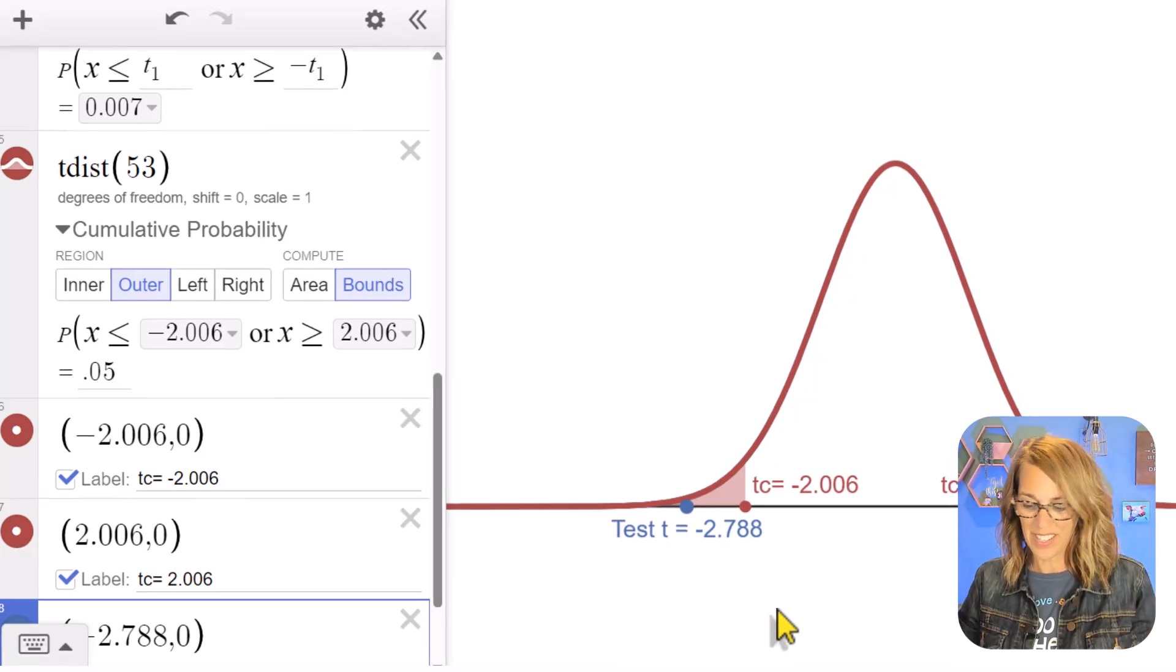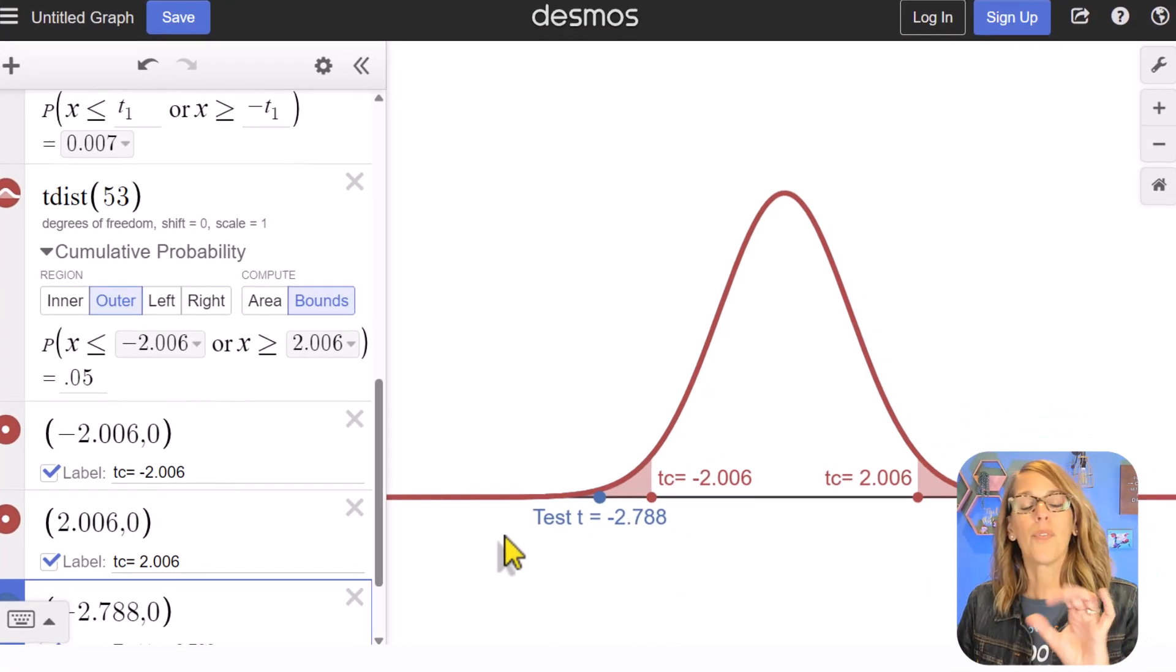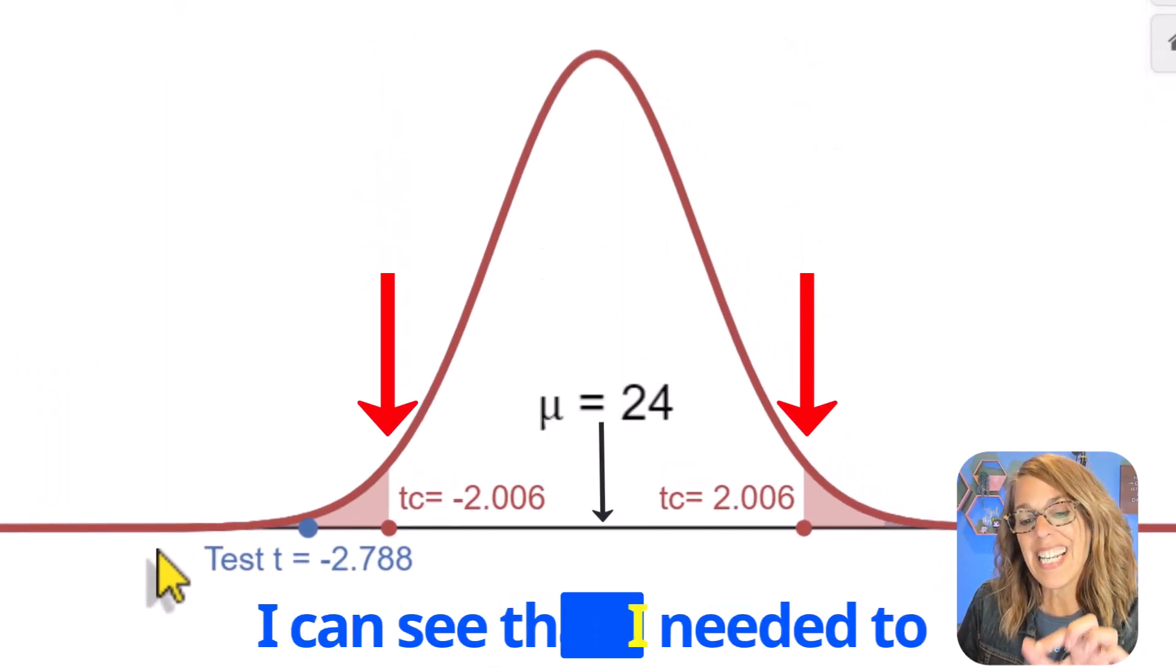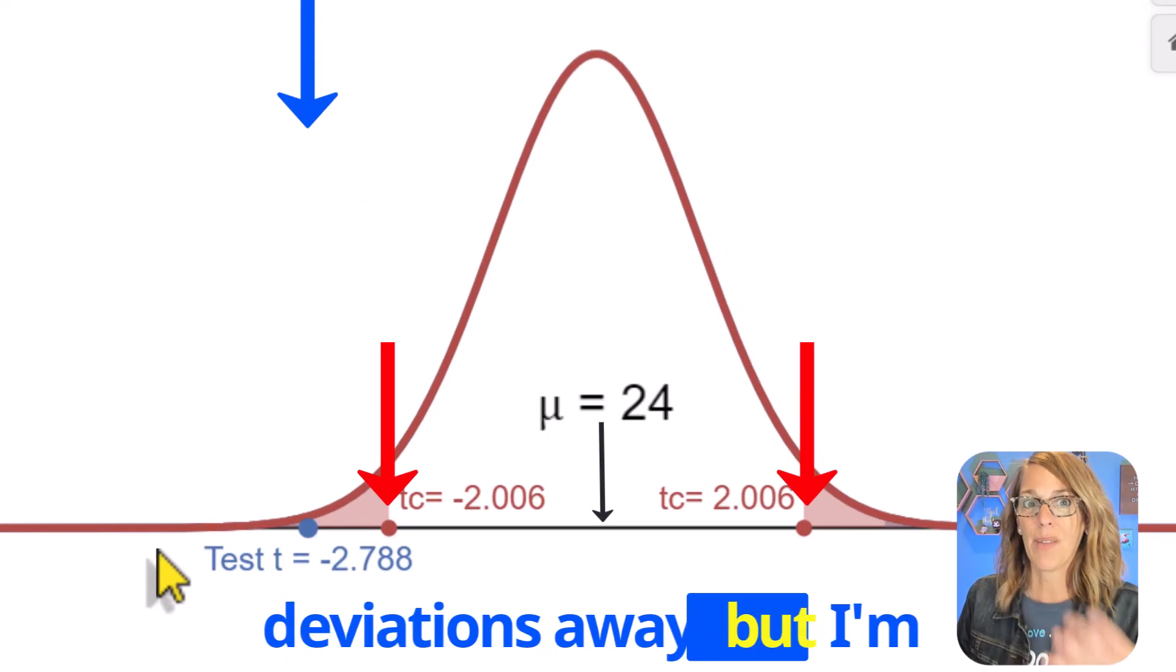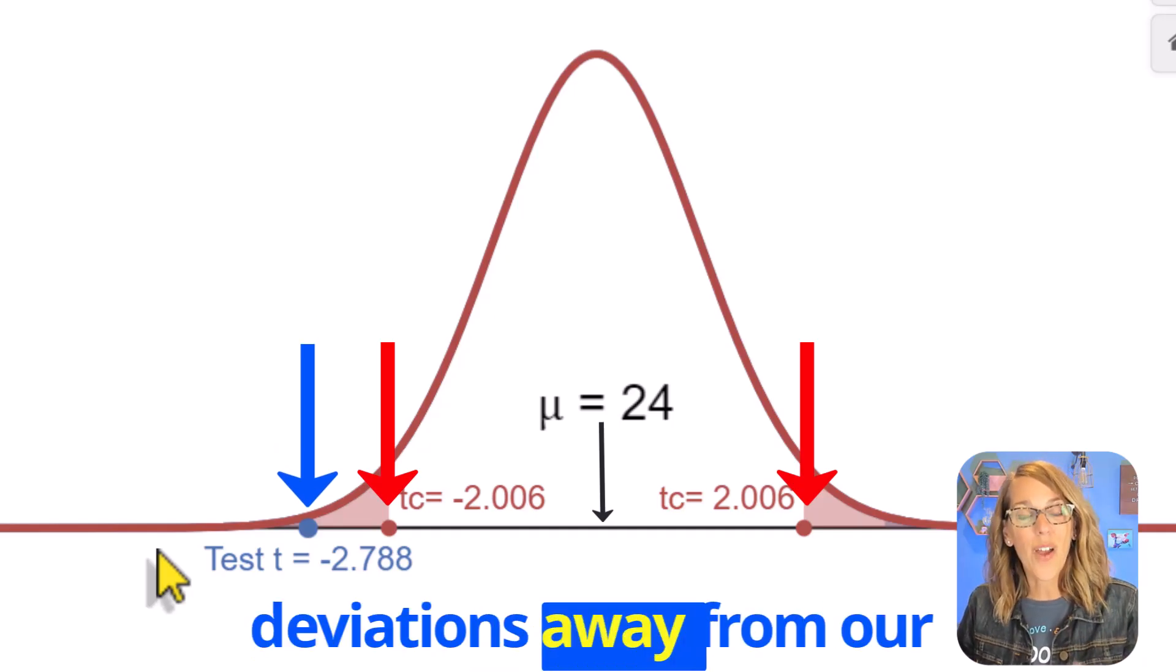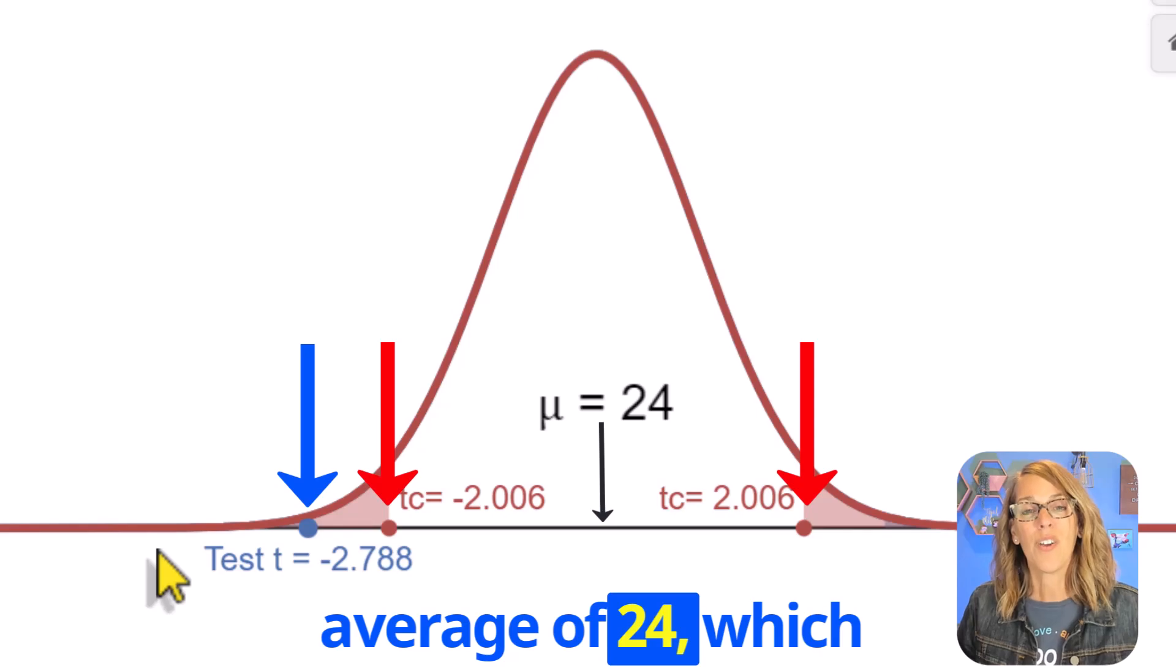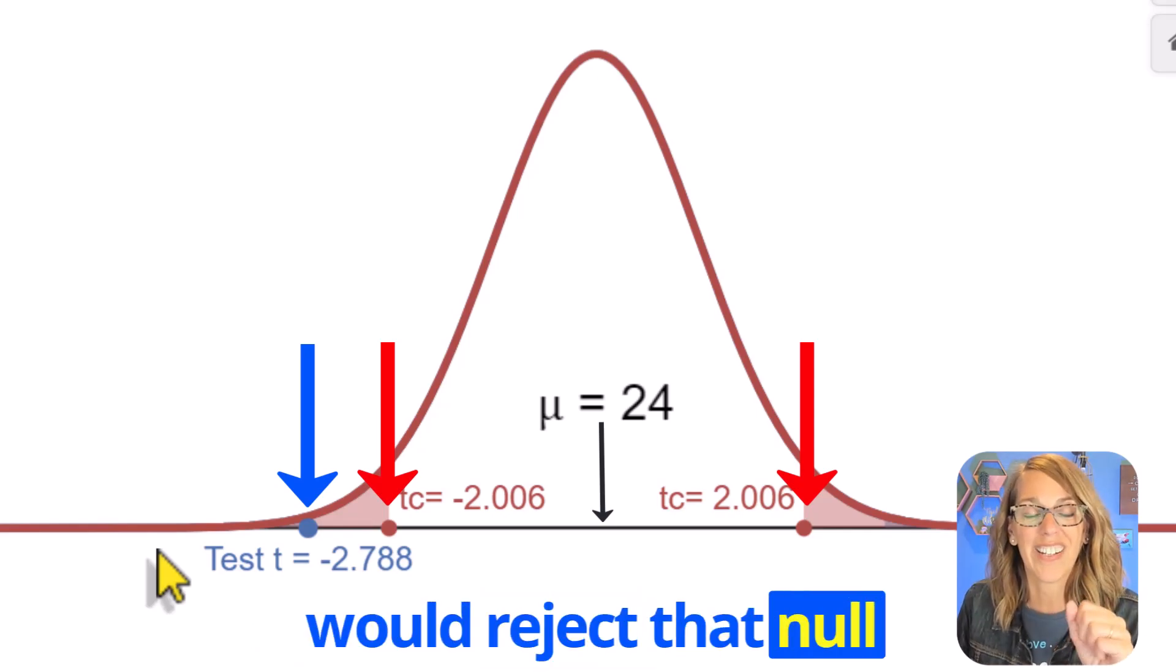Well from my graph now I can see that I needed to be 2.006 standard deviations away, but I'm actually better than that. I'm 2.788 standard deviations away from our average of 24, which means that we are significantly different. We would reject that null hypothesis. I'd love to know how you use hypothesis testing in Desmos. I've got another video for you here.